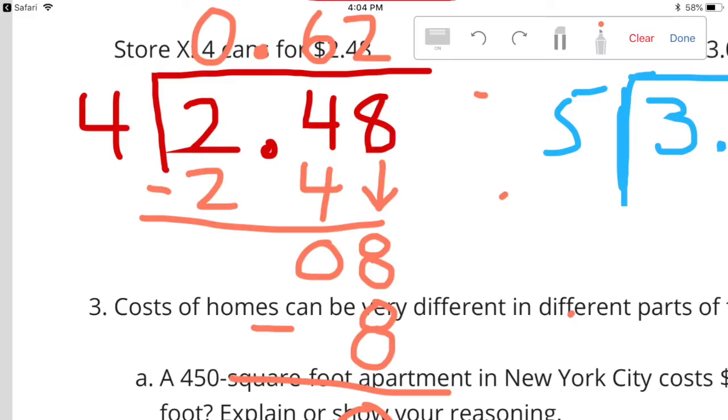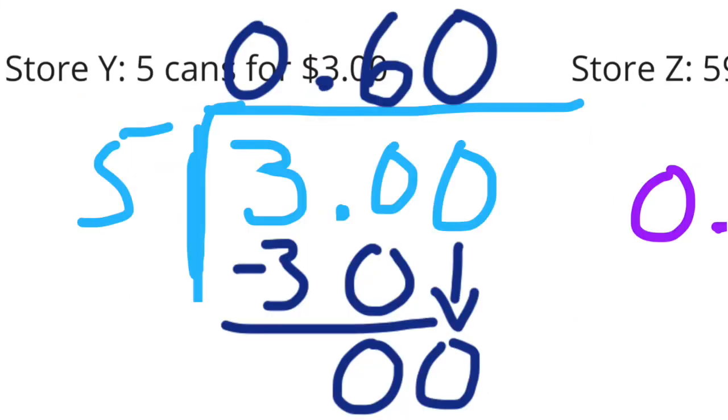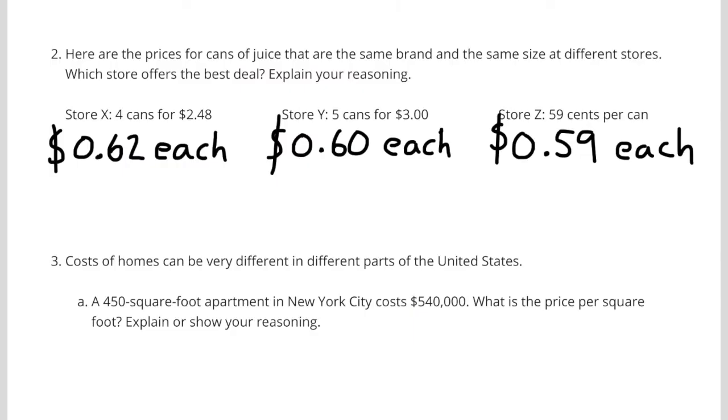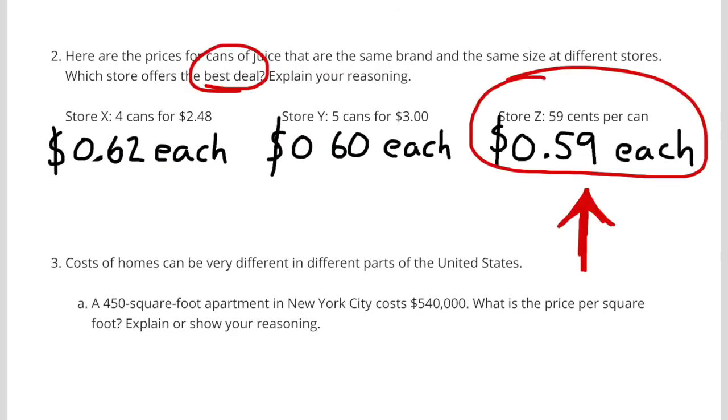4 cans for $2.48 is the same as 1 can for $0.62. 5 cans for $3.00 is the same rate as 1 can for $0.60. Store Z offers the best deal at $0.59 per can.